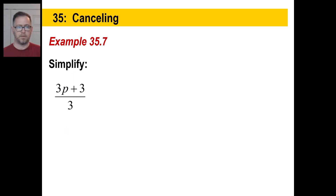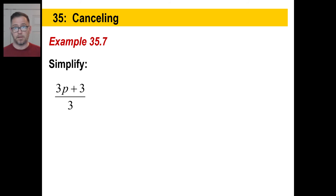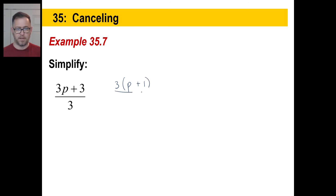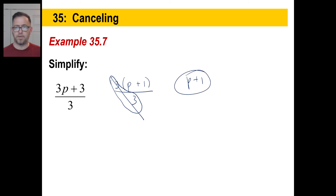Let's look at (3p + 3) / 3. You cannot cancel the threes on top and bottom right away because the three in the numerator is not being multiplied — it's part of an addition. But look at the numerator: 3p + 3. Can we factor that? Yes — three goes into both terms. Factor out the three: 3(p + 1). Now copy the denominator — 3. Now those threes are being multiplied, so they cancel. Your answer is simply p + 1.